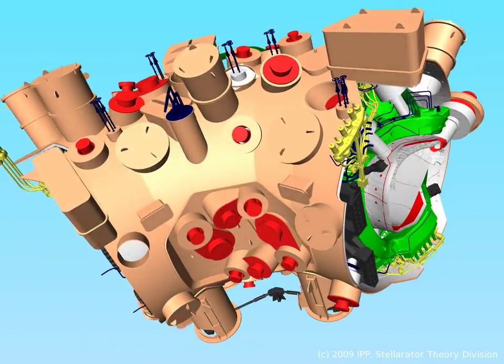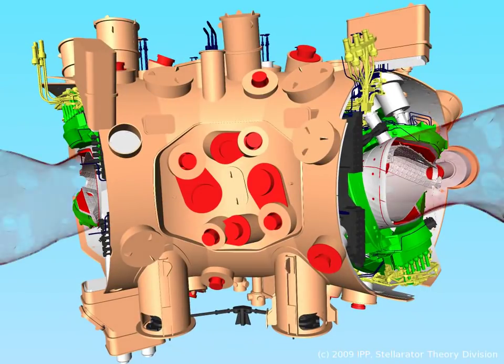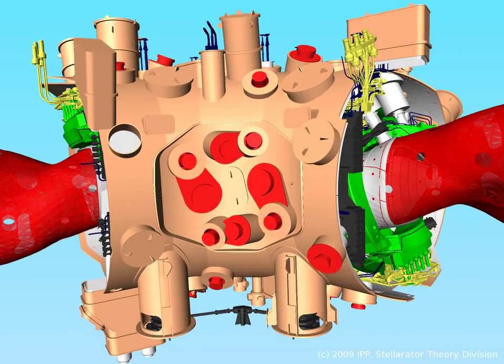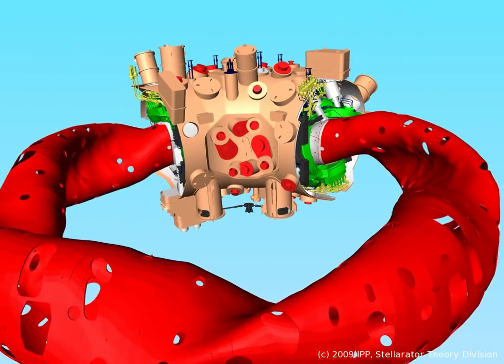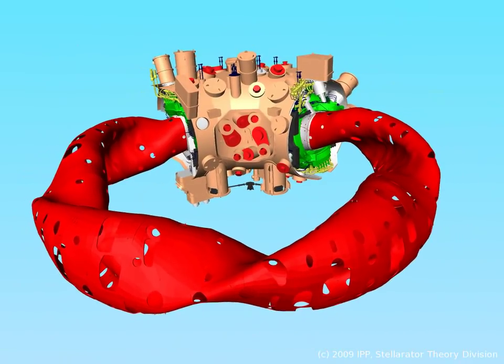At this point, we have completed one-fifth of the machine, and our animation mimics closely the actual steps performed during the assembly. Repeating the process five times and joining the individual sections finally closes the torus.